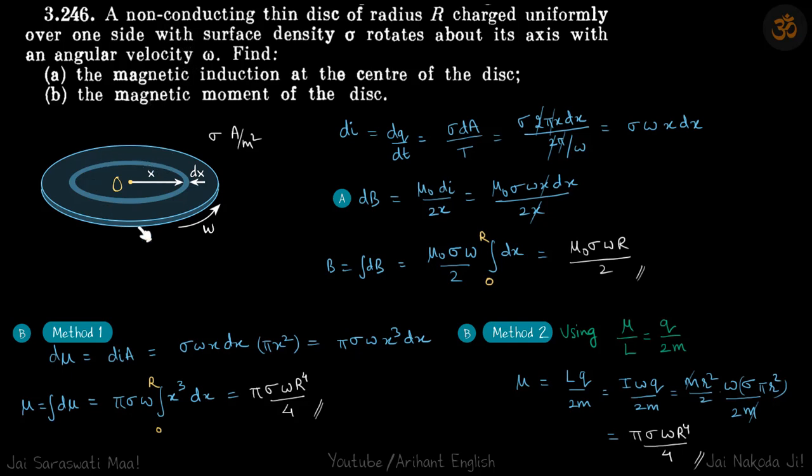Here we are given a thin disk of radius r rotating with angular velocity omega. We are supposed to find the magnetic field at the center and the magnetic moment of the disk.